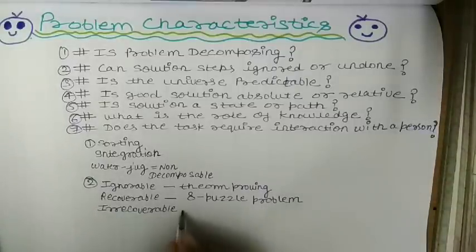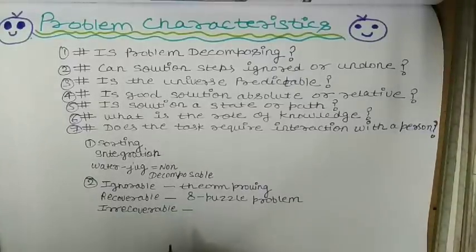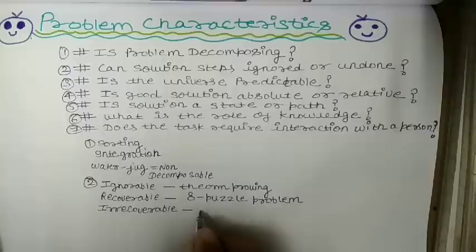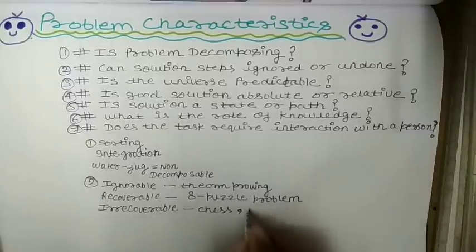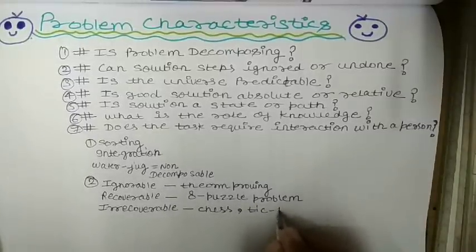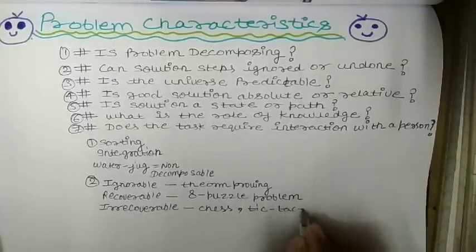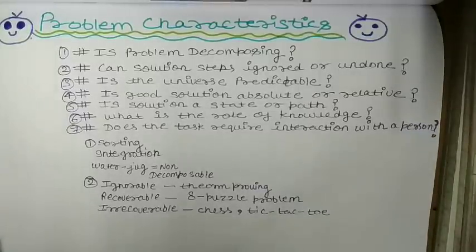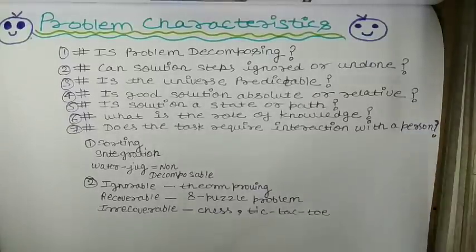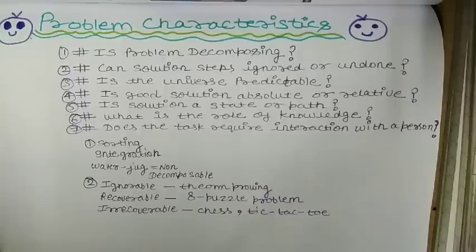Irrecoverable problems are problems which can't be undone. An example of this is chess. We can also take the example of tic-tac-toe to understand this.